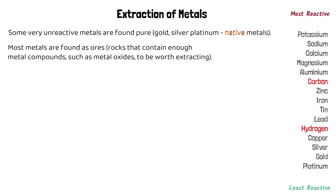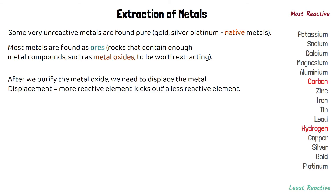Most metals are found as ores. Ores are just rocks that contain enough of a metal compound, such as a metal oxide like copper oxide, to be worth extracting. After we purify the metal oxide found in the ore, we need to displace the metal so that we can obtain the pure metal on its own.